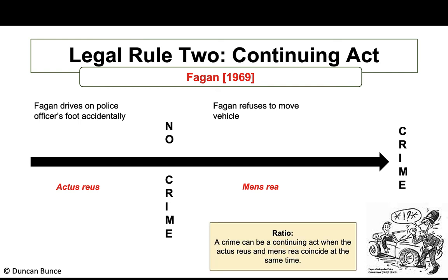The ratio from Fagan: a crime can be a continuing act. The courts are prepared to interpret the timeline of events such that they recognise crimes don't always happen instantaneously — as long as the actus reus and mens rea are present at the same time, the crime exists.